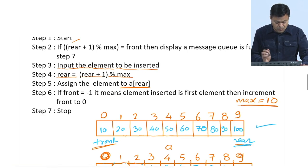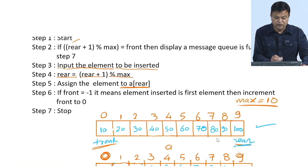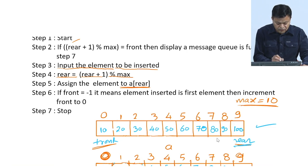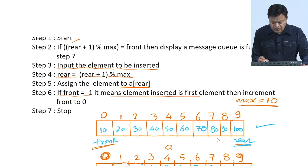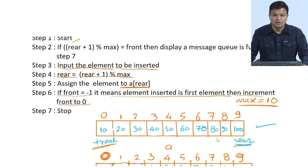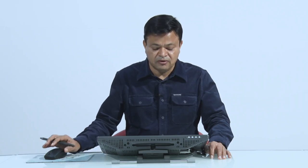Step 6 executes only for the first element. Before the first insertion, both front and rear were minus 1. After inserting the first element, rear becomes 0, so front must also become 0. If front equals minus 1, it means the element inserted is the first element, so we increment front to 0 as well. This completes the algorithm to implement enqueue.